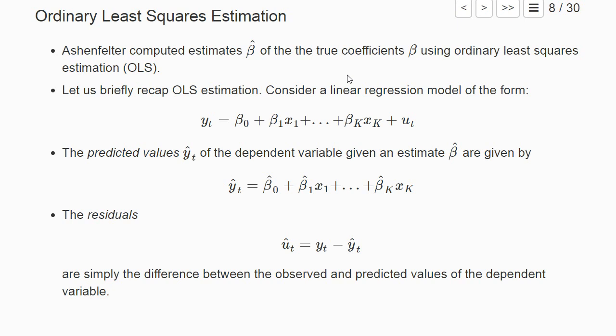If we write the linear regression in a more general form, one typically denotes the dependent variable with y and the explanatory variables with x. Let y hat be the predicted value of the dependent variable given that we have some estimate beta hat of the coefficients.